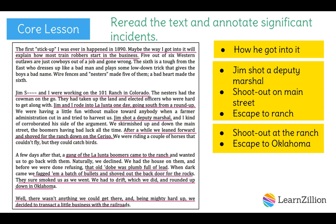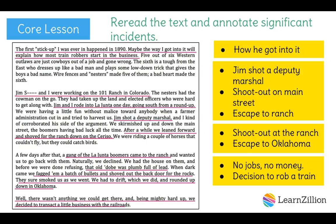Finally, the narrator states that there wasn't anything they could get there — meaning Oklahoma — and being mighty hard up, they decided to transact a little business with the railroads. It's good to stop when you're not quite sure what someone is saying. From my close reading, I know that the narrator and his friend Jim did work on a ranch before, so when he says there wasn't anything they could get there, he means there are no ranch jobs. When he says being mighty hard up, he means they don't have any money. The word 'transact' along with 'business' usually has something to do with a bank, like withdrawing money — but it's a funny way of saying this is when he decides to rob a train because he needs the money.